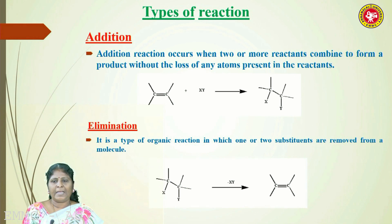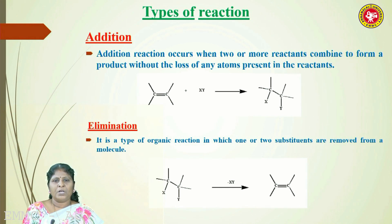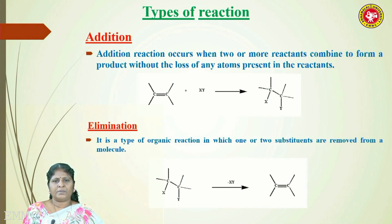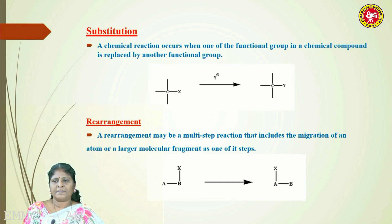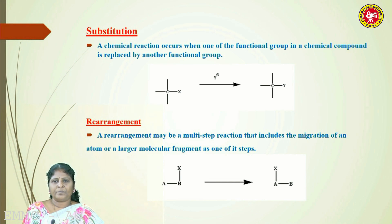The next major category is elimination, which is the contrast to addition. In elimination, two groups or atoms are removed from adjacent carbon atoms so that a new pi bond is formed, giving a doubly or triply bonded system. The third category is substitution: a C-X bond is cleaved and a new C-Y bond is formed, so a newer group or atom replaces the old one, producing a new compound with a new functional group.